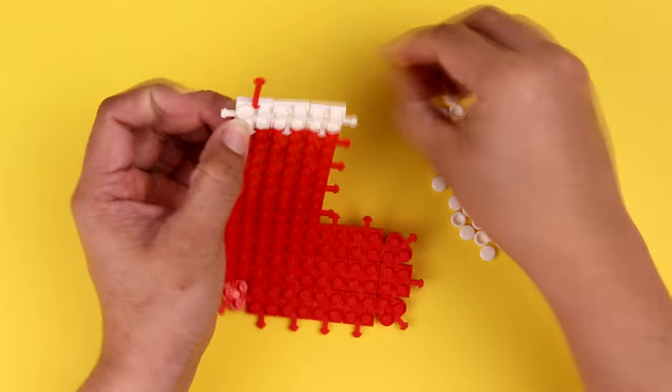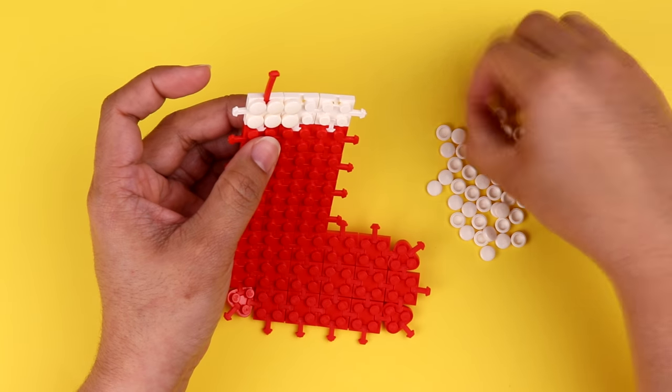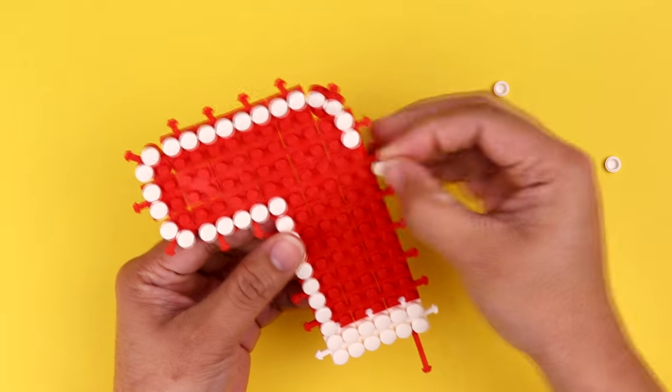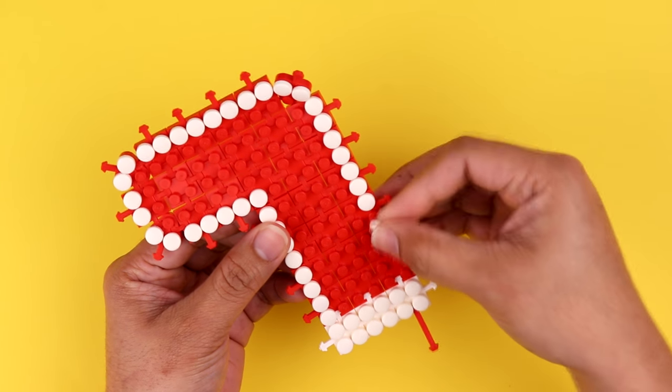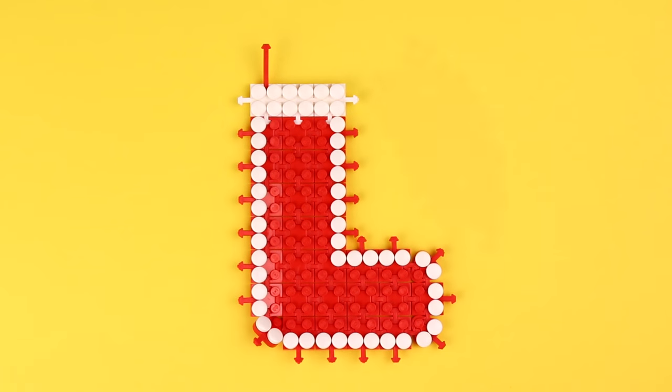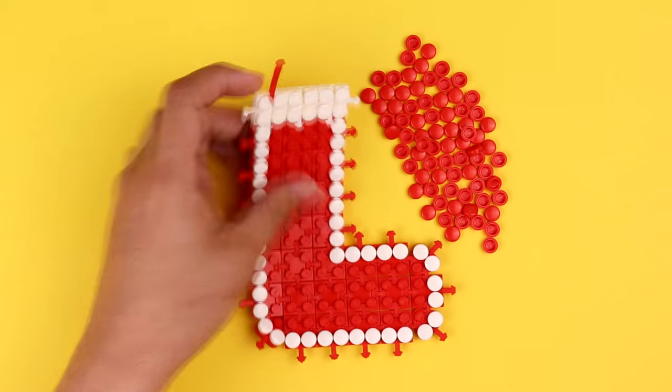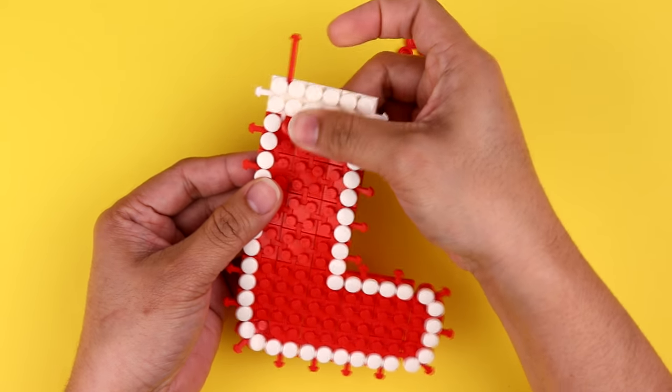Now we're going to add our Flexo domes. There's nothing complicated about this depending on which pattern you choose to do. We've gone for a pretty simple white outline and then we'll fill in the middle with red domes. So on this first half of our stocking we can completely cover it in domes.